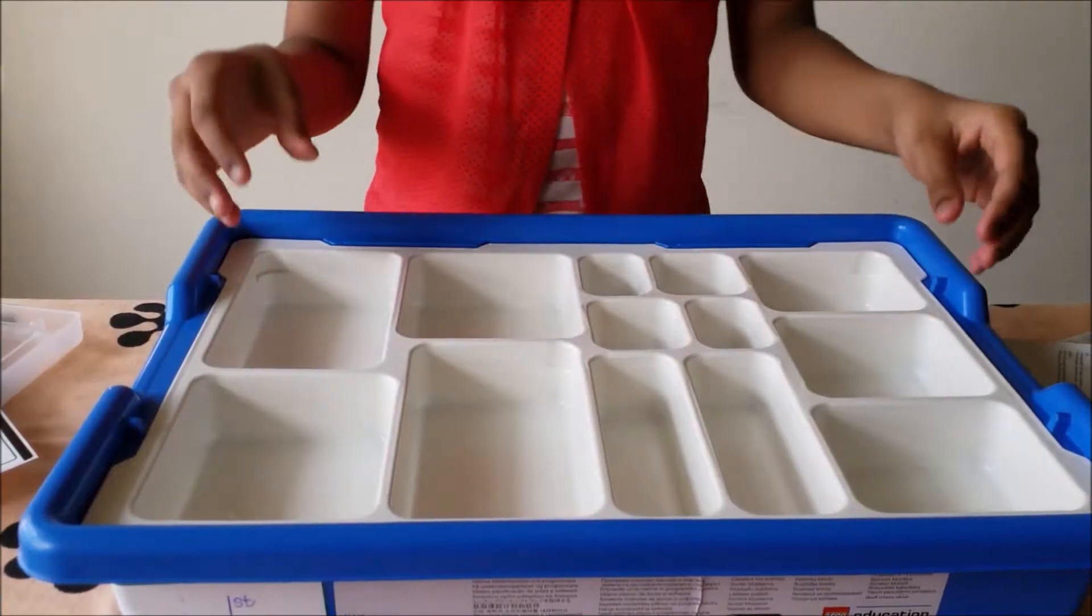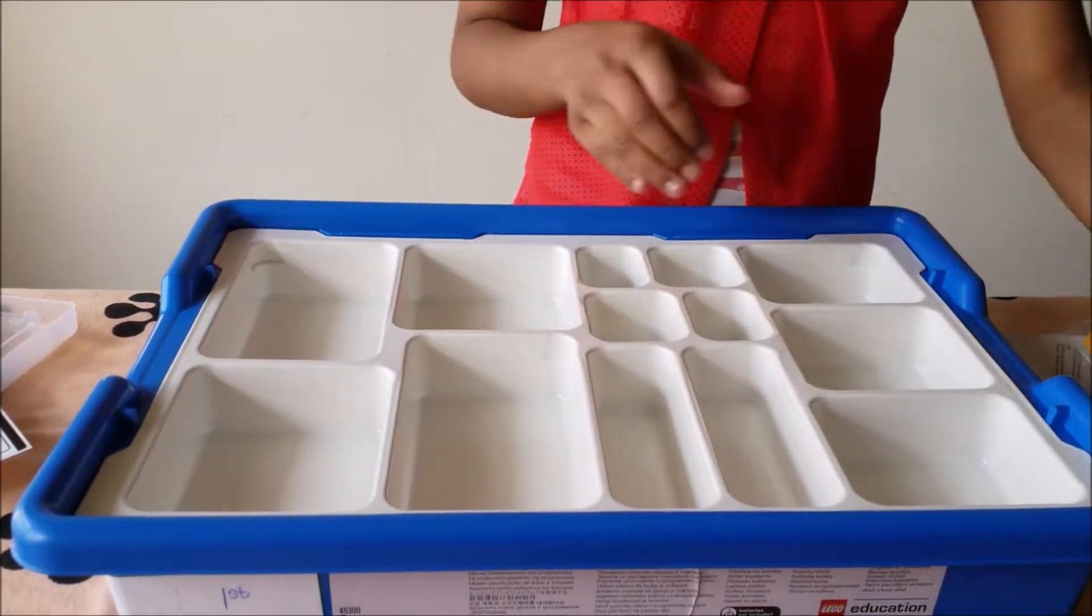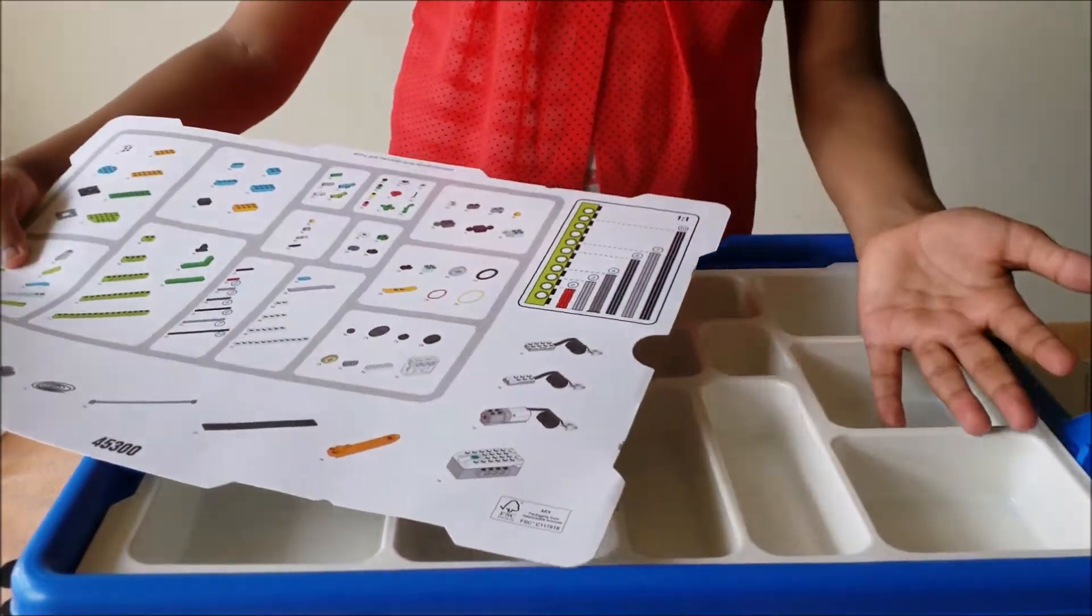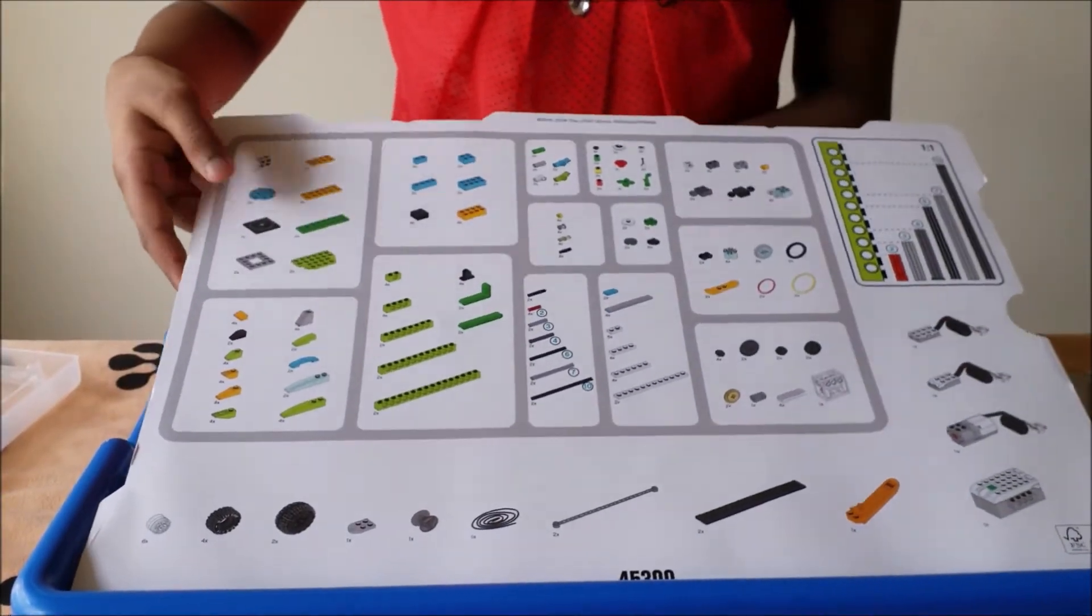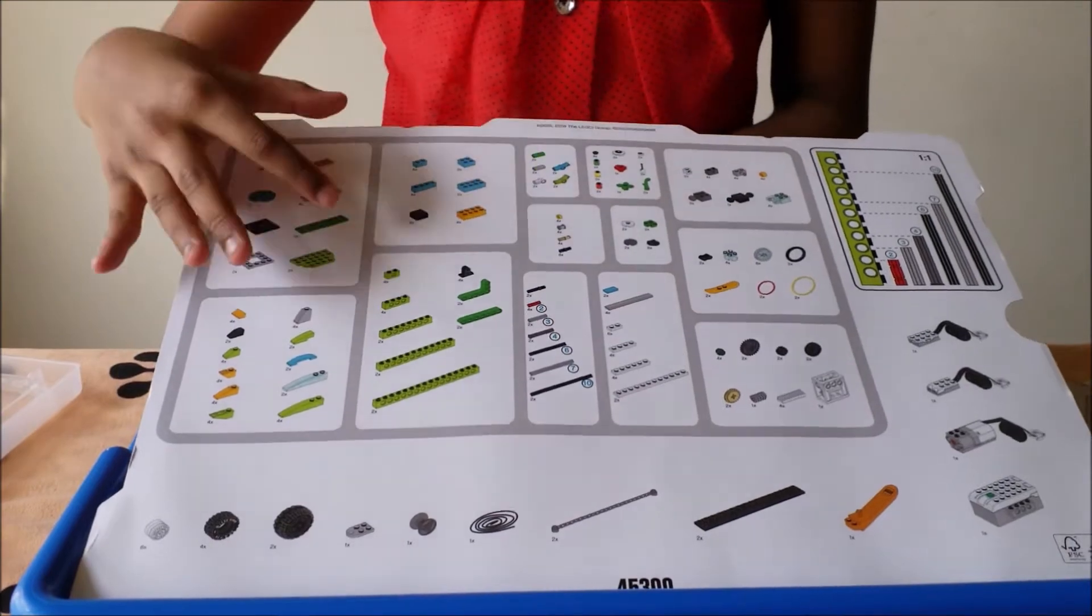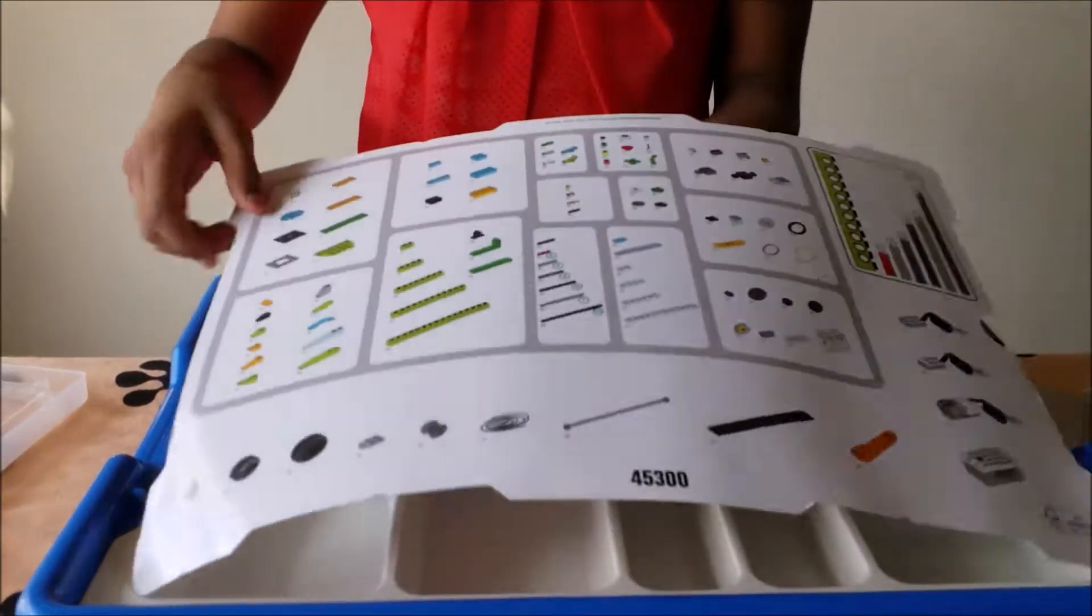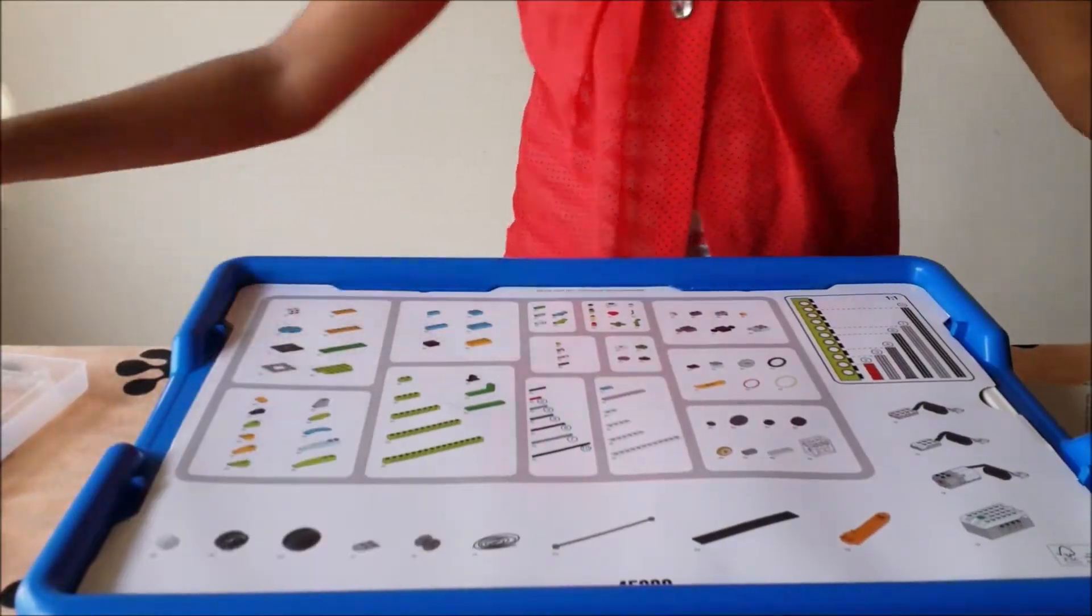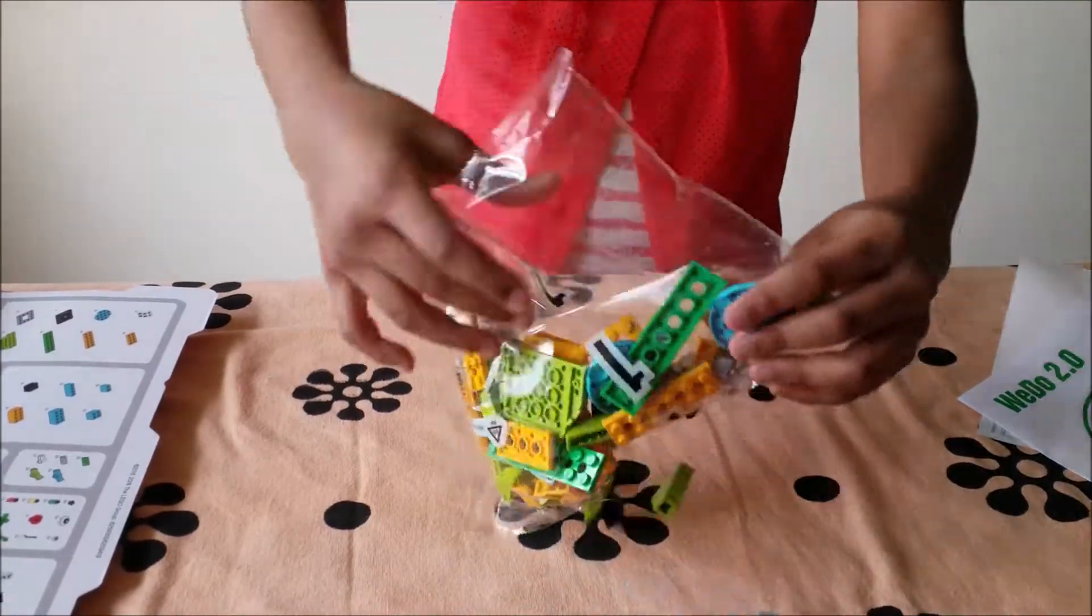Now let's see how to organize these LEGO pieces in these trays. We're going to organize the LEGO pieces into this tray. This is where we should put all the pieces in each box. Okay, this is the first pack. Let's open it.